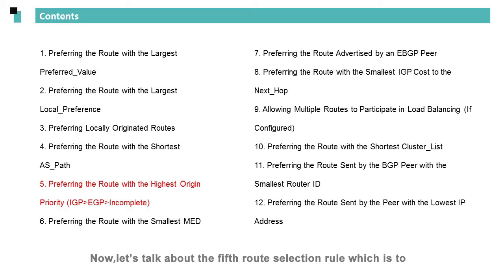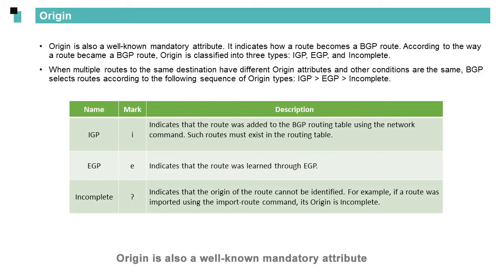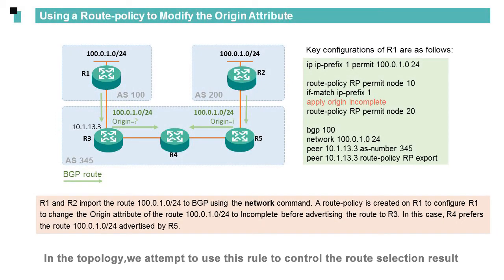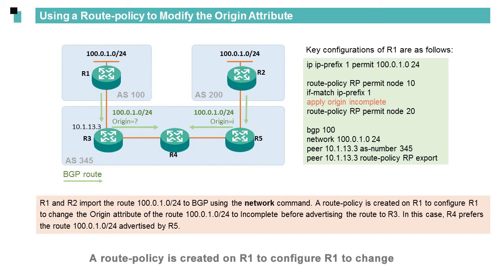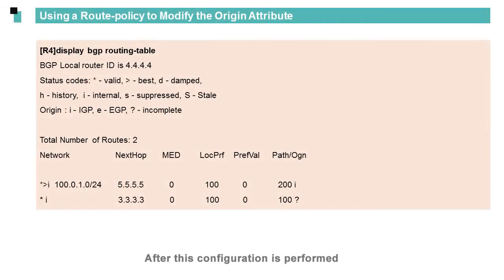Now, let's talk about the fifth route selection rule, which is to preferentially select the route with the highest origin priority. Among the origin values, IGP has the highest priority, followed by EGP, and then incomplete. Origin is a well-known mandatory attribute indicating how a route becomes a BGP route. In the topology, a route policy is created on R1 to configure R1 to change the origin attribute of the route 100.0.1.0/24 to incomplete before advertising the route to R3. In this case, R4 prefers the route 100.0.1.0/24 advertised by R5. After this configuration, you can view the change of the origin value in the BGP routing table.